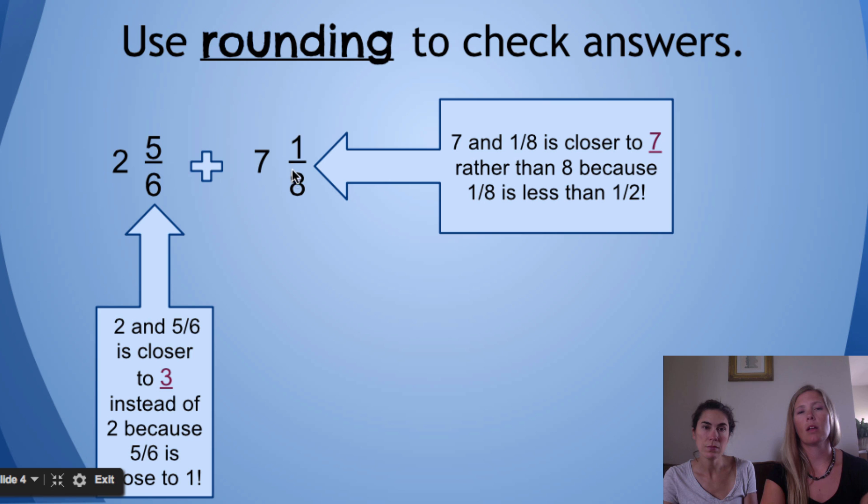Seven and one-eighth, well, anything that's a unit fraction like this where the numerator is one and the denominator is something else, it's pretty close to zero. So, I'm going to just leave this at seven. So, this becomes a three, this becomes a seven. So, if I am estimating based on my rounding, I would just be adding three plus seven and get ten.